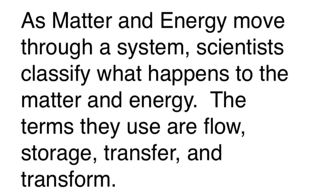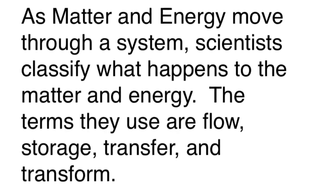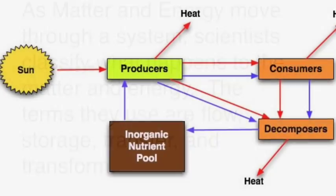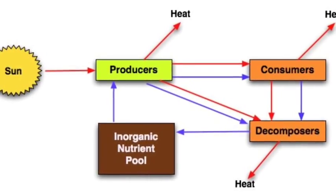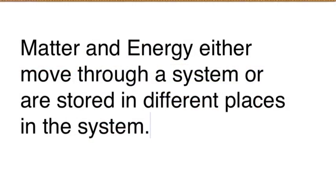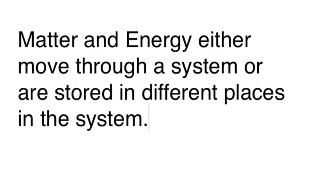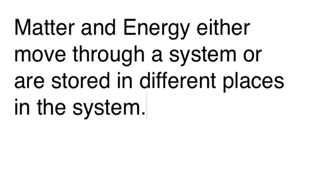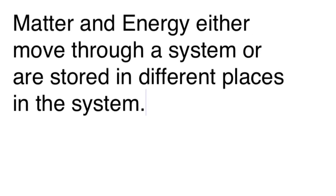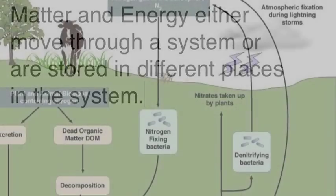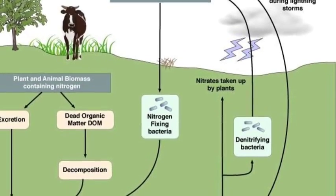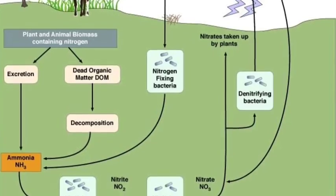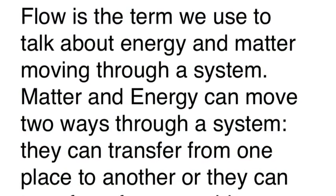As matter and energy move through a system, scientists classify what happens to them. The terms they tend to use are flows, storage, transfers, and transformations. Matter and energy either move through a system or they stay placed in a system — they're stored there. So they're either moving or staying put, and depending on which, we call it either a flow or a storage.